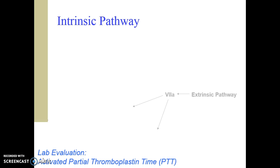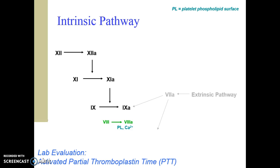The intrinsic pathway involves the sequential activation of factors 12, 11, 9, and 8. Together, factor 9a and its cofactor 8a, with the help of calcium in the blood and the activated platelet surface, activates factor 10 and the rest of the common pathway. In the laboratory, intrinsic pathway factor function is evaluated by the activated partial thromboplastin time, also known as the APTT or PTT test.